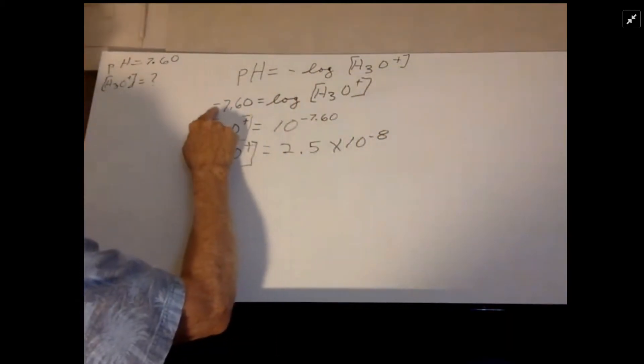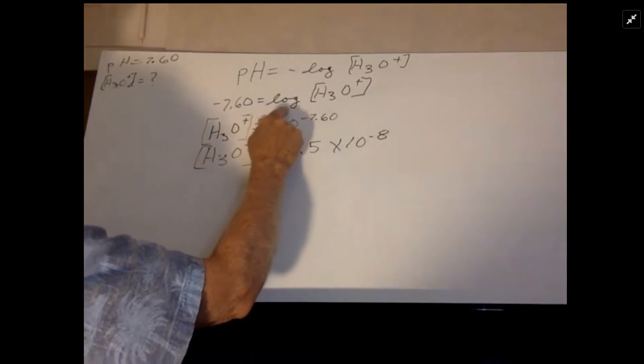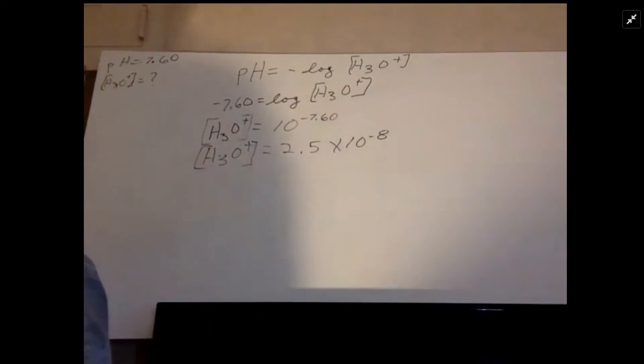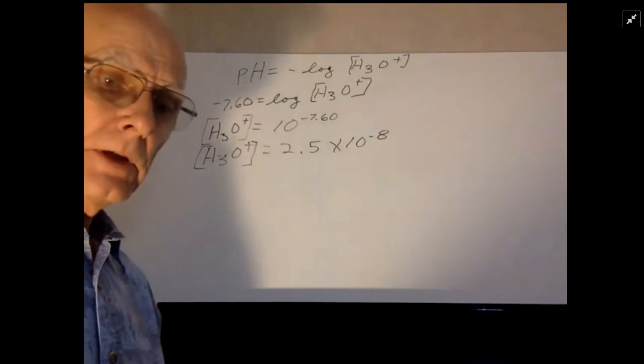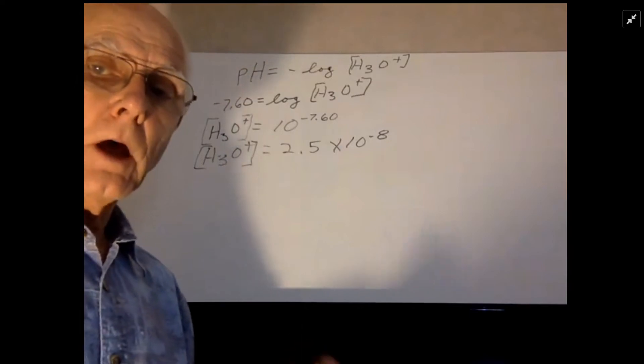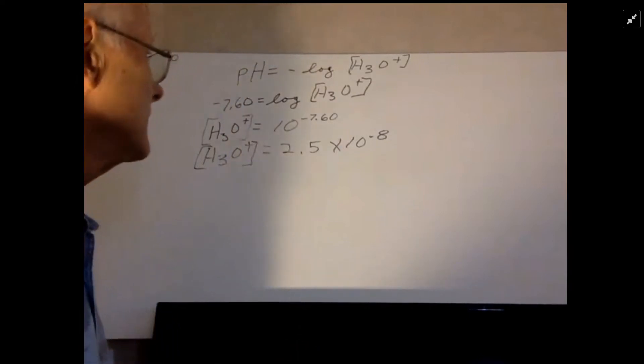So I can say negative 7.60 equals the log of the H3O+ concentration, and for this problem all you really need to know about logs is that the log is an exponent.